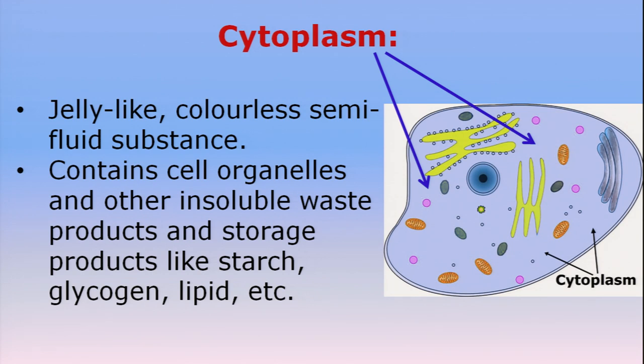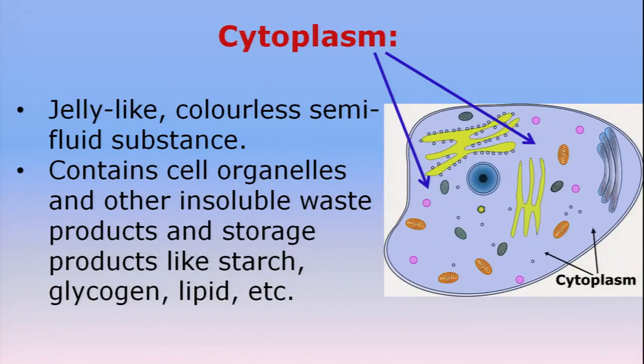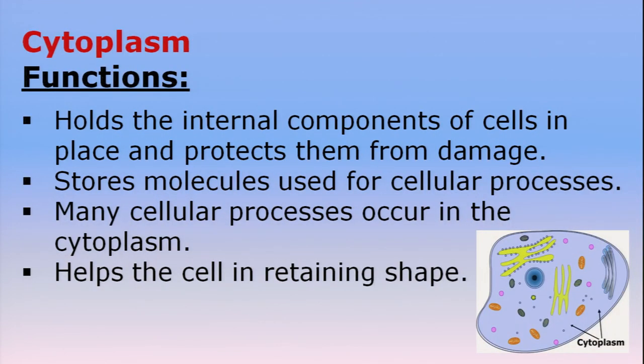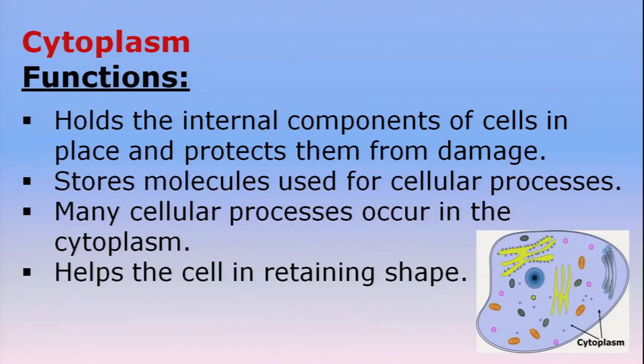Cytoplasm is the fluid content of the cell. It is transparent and jelly-like, containing about 80% water. It appears jelly-like because it contains many insoluble waste products and storage products like starch, glycogen, and lipids. Cytoplasm holds all internal components of the cell in place, protects them from damage, stores molecules used for cellular processes, and helps the cell retain its shape.